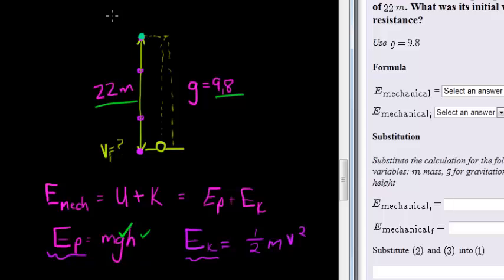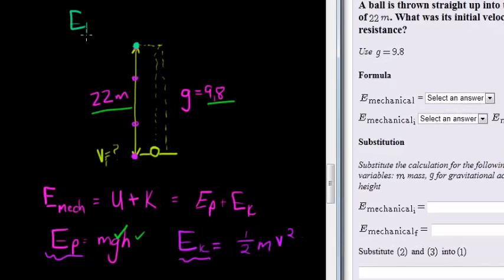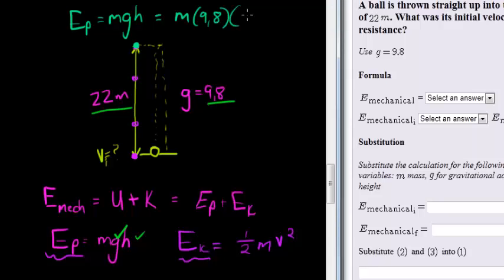So at the top, I get that my potential energy at this top is equal to mass times gravity times height, which is equal to mass, I don't know. Now, gravity is 9.8 and height is 22. Now, what is the kinetic energy here at the top? Well, it stopped moving. It's reached its maximum height, so it doesn't have any velocity. So kinetic energy will simply be zero.